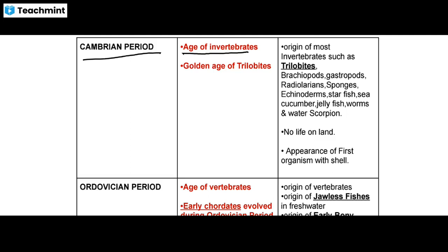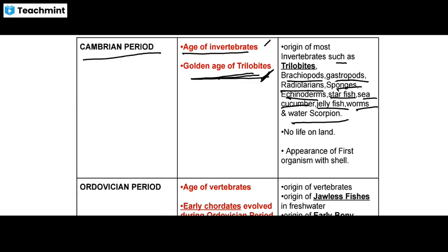The Cambrian period is the golden age of Trilobites. The origin of most invertebrates occurred during this period, such as Trilobites, Brachiopores, Gastropores, Radiolarians, Sponges, Echinoderms, Starfish, Sea Cucumber, Seafish, Jellyfish, Worms, and Water Scorpions.